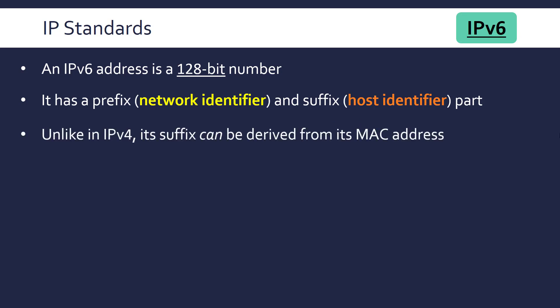There are some differences though, because this was an opportunity for researchers to do some additional work, not just increase the size. Unlike IPv4, the suffix part can actually be derived from the MAC address, which is interesting because normally they would be separate. We've talked about how the MAC address is linked to the network adapter — the physical address — and the IP address is the logical address. But there is some connection in IPv6, though we don't need to address that yet.